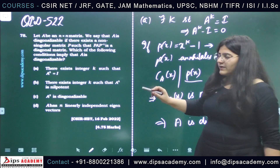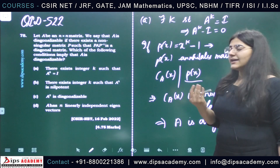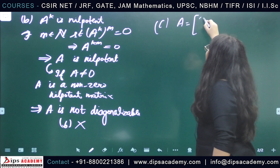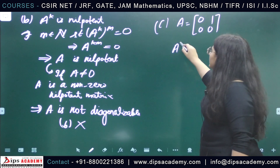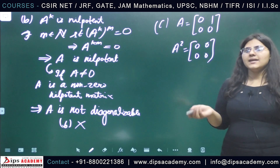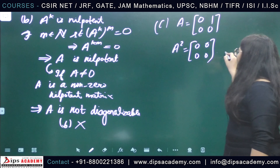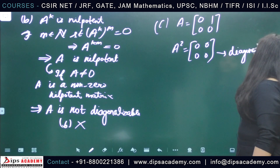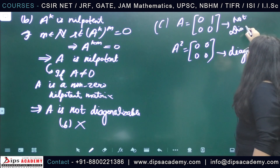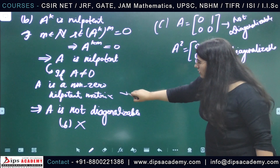Option C states that if A squared is diagonalizable, does this imply that A is diagonalizable? Let us consider a counterexample: take A as a non-zero nilpotent matrix. Then A squared is the zero matrix, so A squared is diagonalizable. But A is a non-zero nilpotent matrix, so A is not diagonalizable. Therefore option C is incorrect.